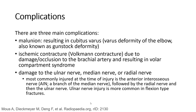The three main complications are: first, malunion resulting in cubitus varus; second, ischemic contracture due to damage or occlusion to the brachial artery causing compartment syndrome; and third, damage to the ulnar nerve, median nerve, and radial nerve. Most commonly, injury at the time of fracture involves the anterior interosseous nerve, followed by the radial nerve, and then the ulnar nerve. Ulnar nerve injury is more common in the flexion type fracture.